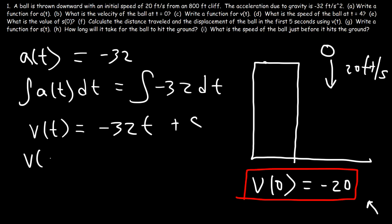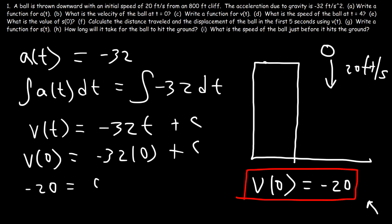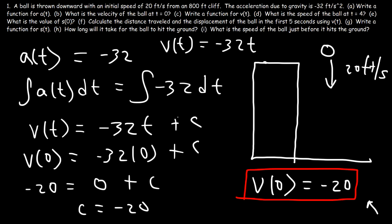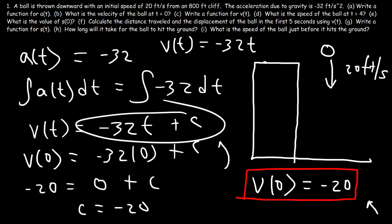Now we need to use the initial condition to find the value of C. Let's replace t with 0. v of 0 is negative 20, and negative 32 times 0 is 0, so we can see that C is negative 20. So the velocity function is negative 32t minus 20. All we need to do is replace C with negative 20, and that's the velocity function.